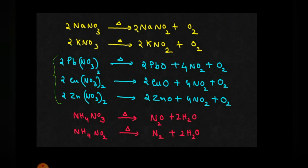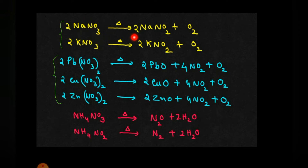Remember, whenever a metal nitrate is undergoing decomposition reaction, you can expect a metal oxide, nitrogen dioxide gas, and oxygen gas as products of the reaction. But certain exceptions are also there. Remember: sodium nitrate and potassium nitrate are exceptions. If you are heating sodium nitrate or potassium nitrate, you won't be getting nitrogen dioxide gas.